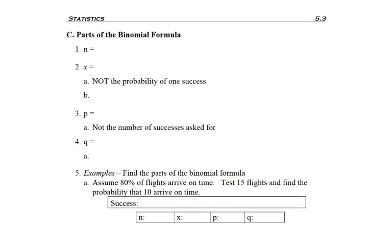Not only are there four requirements to be a binomial, there are four items that get plugged into the binomial formula. The first of those is n, and n represents the number of trials.